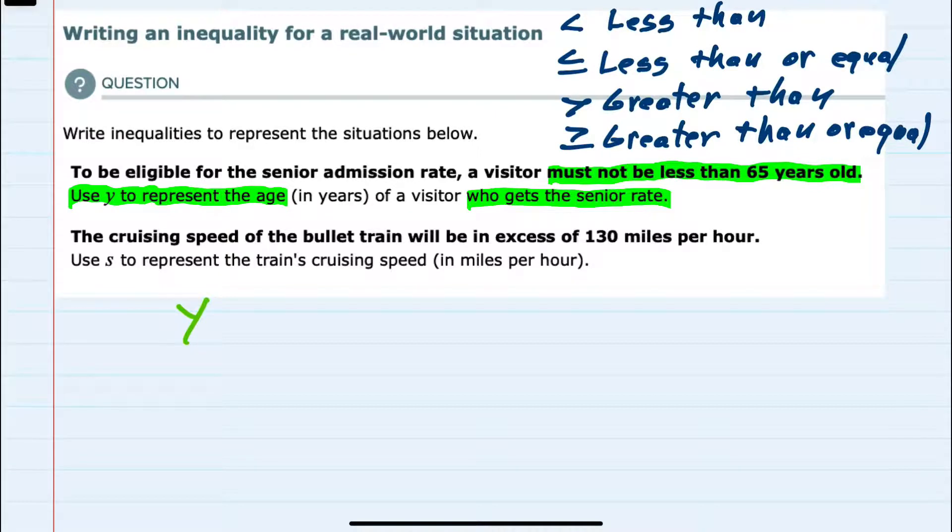Must not be less than means that they should be greater than and that they could be equal to. So if I were to say y is greater than or equal to 65,